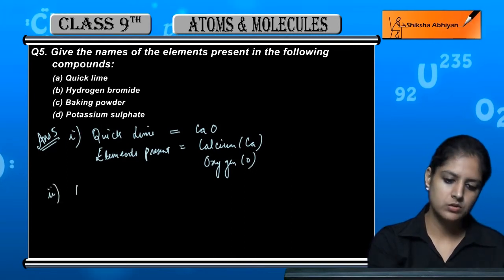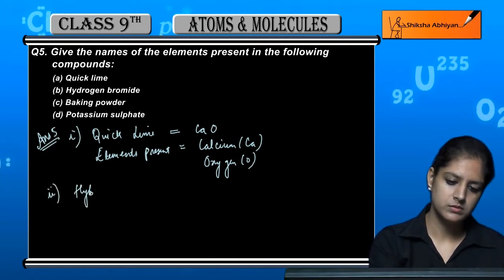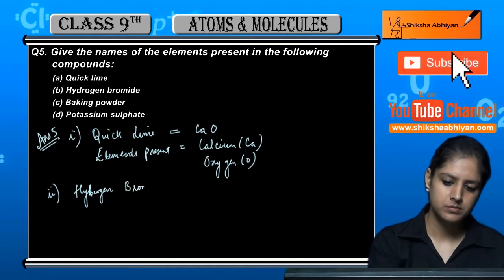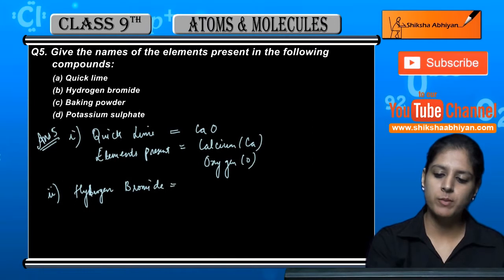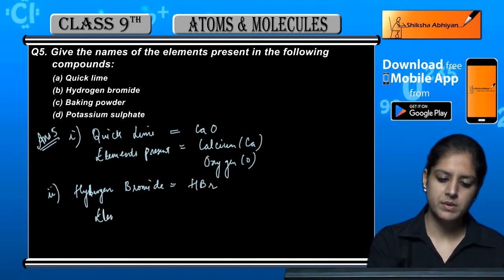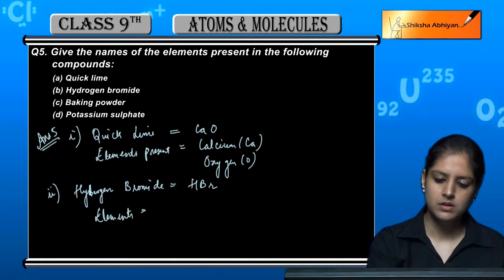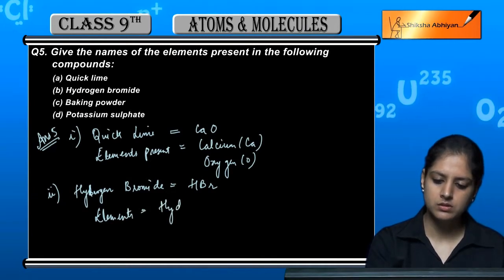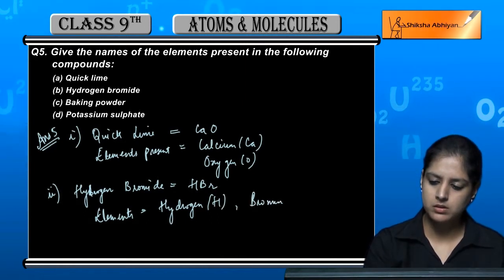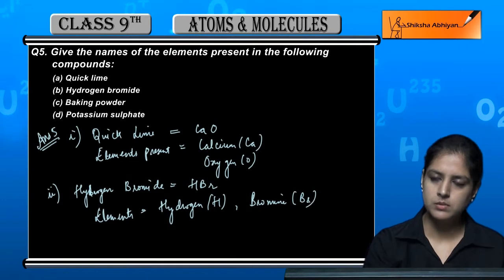Next is hydrogen bromide. Hydrogen bromide's formula is HBr. The elements are hydrogen, which is H, and bromine, which is Br.